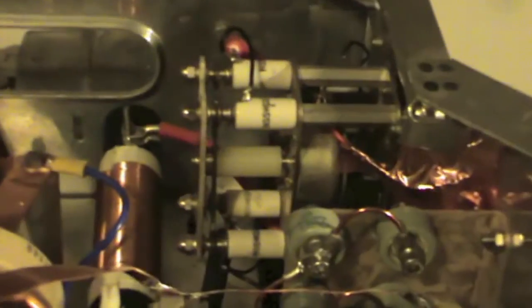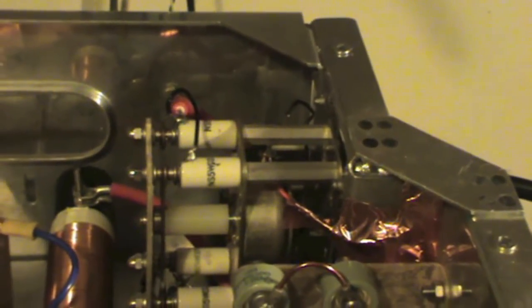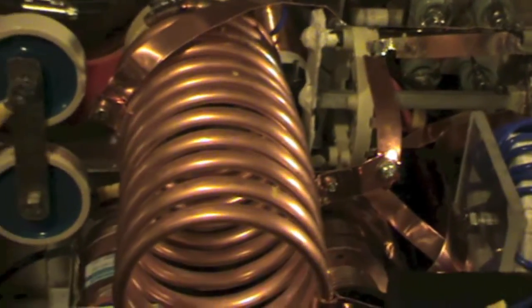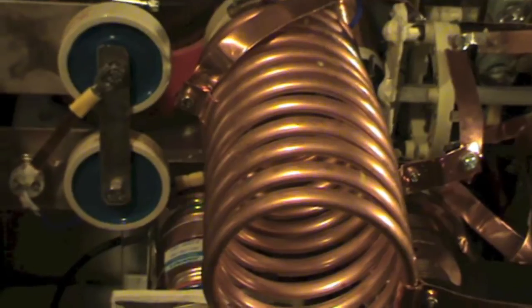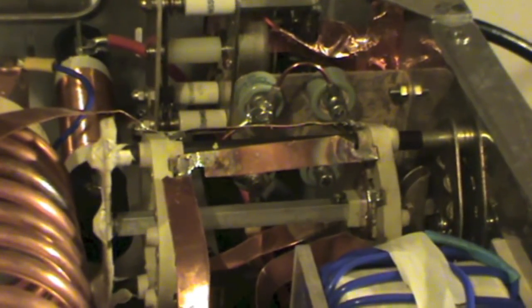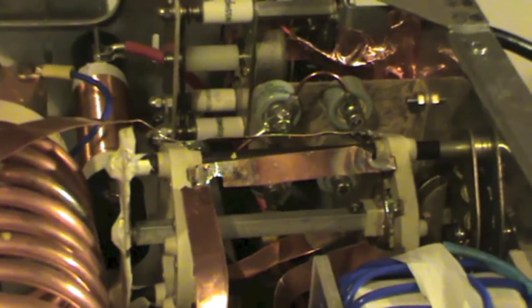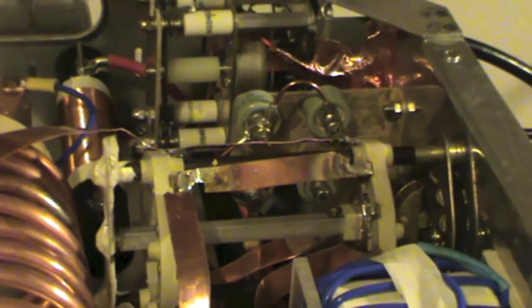Moving to the back there we've got the plate choke and that's the aerial changeover relay. Moving down, this is the main tank coil, and over there we have the band changeover switch. At the back you can also see some padding capacitors which add extra capacitance to the tank circuit.